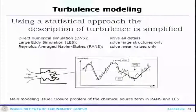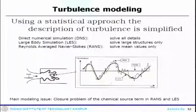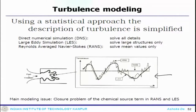Moving ahead, most of our practical problems are turbulent in nature. Turbulent flow fields are not like laminar flow fields — you have different kinds of scales. If you look at the instantaneous flow field it is essentially chaotic in nature. Turbulence, in one word, can be described as the chaoticness of the fluid particle.